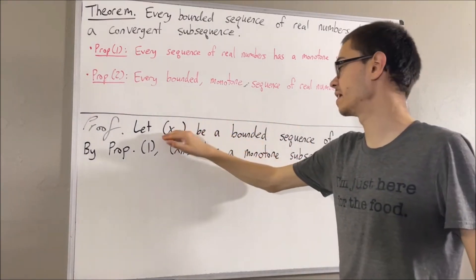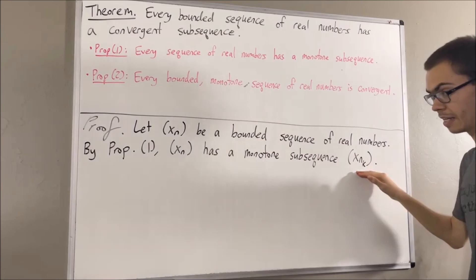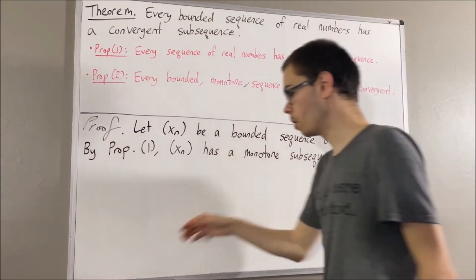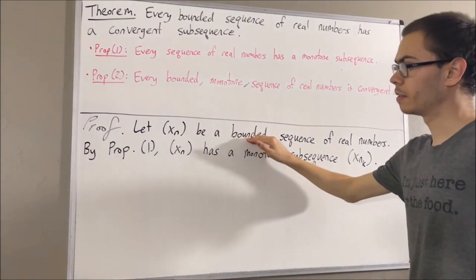Since xn is bounded, we should expect the subsequence xnk to also be bounded. Why is that the case? Well, what does it mean for xn to be bounded? It means the following.